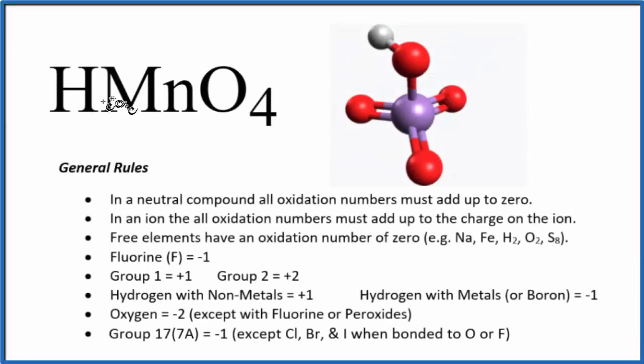To find the oxidation number for each element in HMnO4, permanganic acid, we'll use these rules here. First thing to notice, there's no negative or positive sign after the formula. So this is a neutral compound, and all the oxidation numbers will add up to zero.